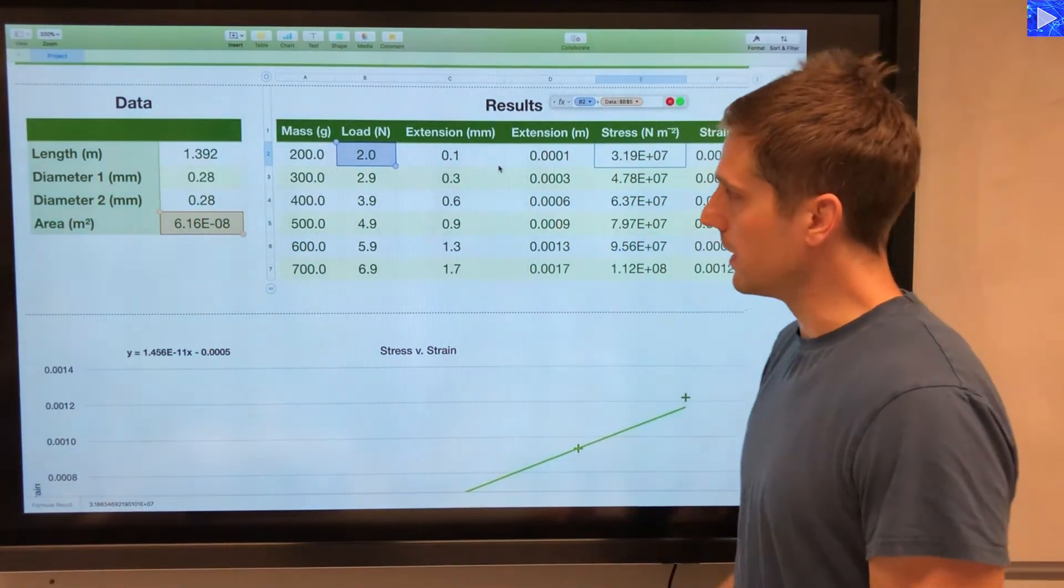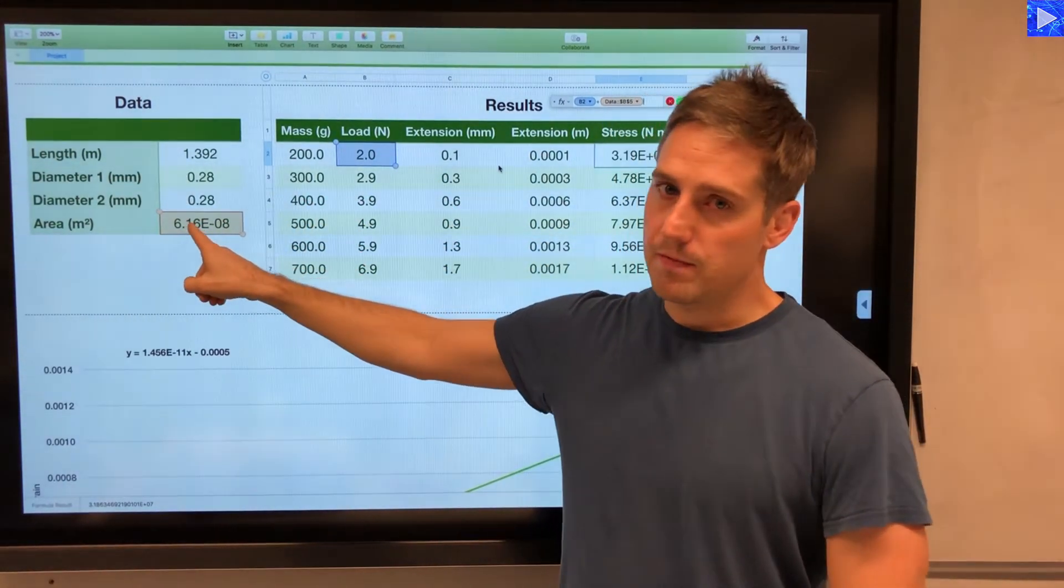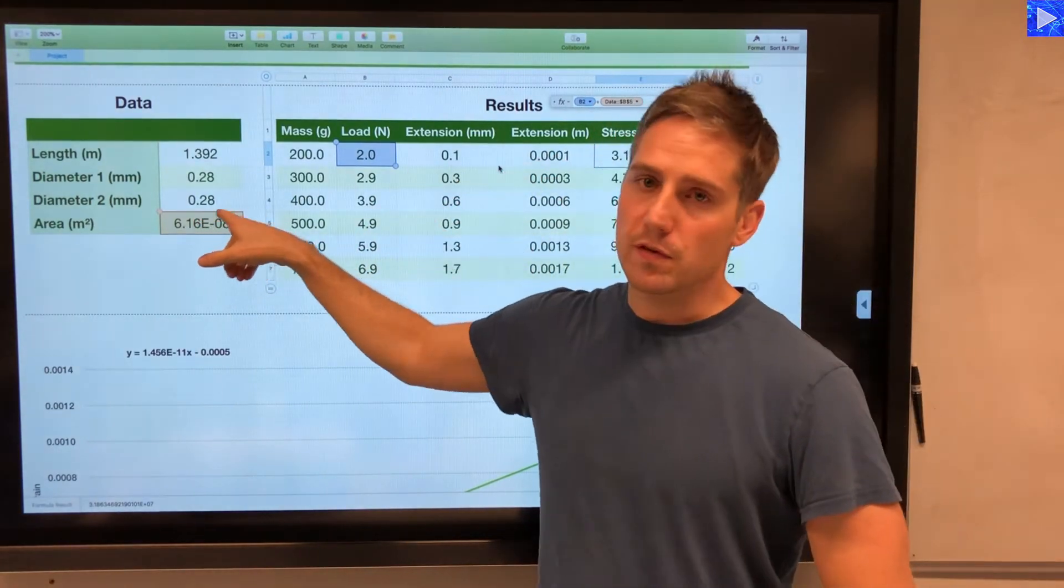This is the average cross-sectional area. So each of these load values down here gets divided by the same value here. I've used a fixed data reference for that cell there.